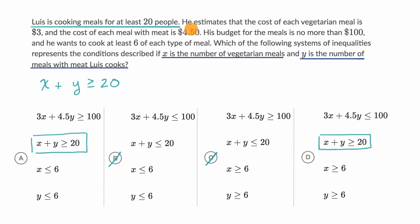The next constraint they tell us, he estimates that the cost of each vegetarian meal is $3, and the cost of each meal with meat is $4.50. His budget for the meals is no more than $100. So how much is he gonna spend in total? Well, on the vegetarian meals, he's going to spend the number of vegetarian meals times $3 per meal.